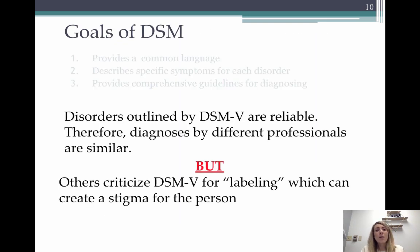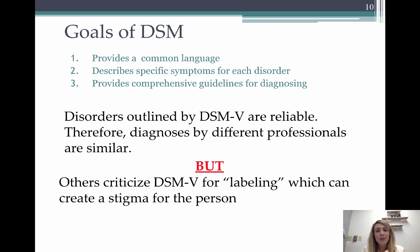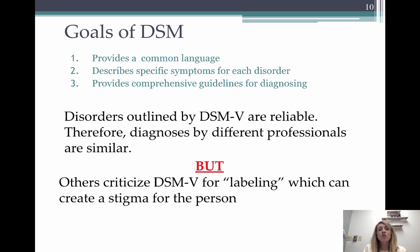The goals of the DSM are to provide a common language so we're all using the same names and symptoms for disorders, to give specific symptoms — so I can distinguish OCD from a germ phobia even when they overlap — and to provide comprehensive guidelines. It's not just one symptom; it may be five, six, seven, or more symptoms depending on the disorder, plus a full background and history of the disorder so clinicians and health professionals can accurately diagnose.